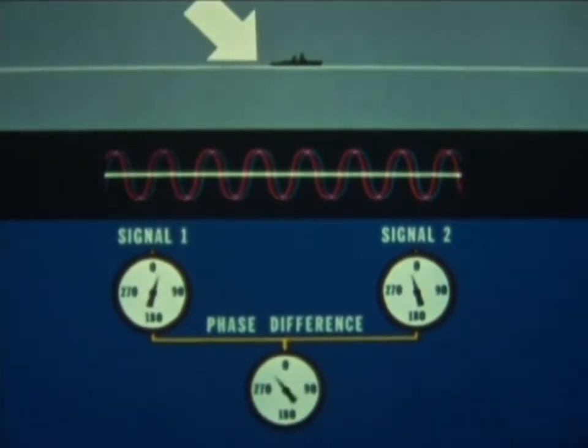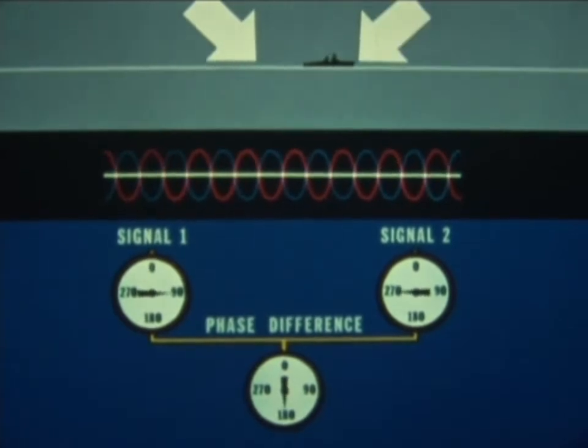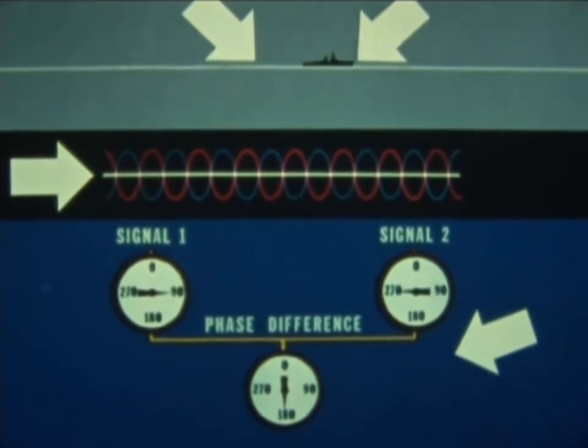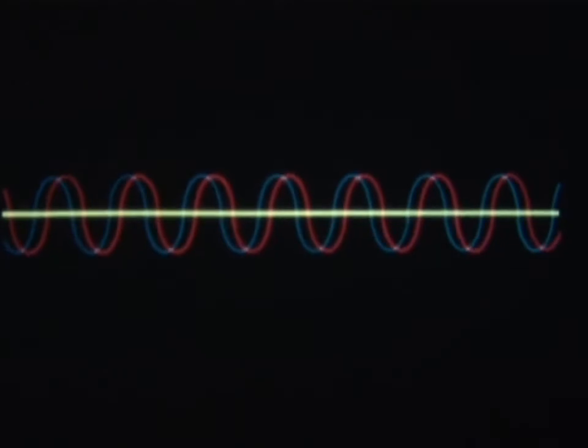As the receiver begins moving toward one station and away from the other, we begin to get a phase difference due to the difference in distance the signals travel. In our simplified receiver, you can see this phase difference being measured. The sine waves simply show the changing phase difference graphically.